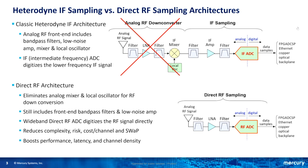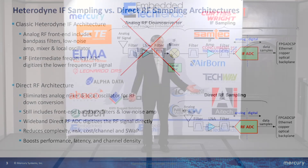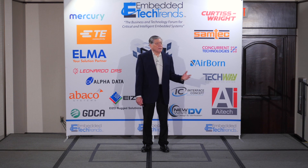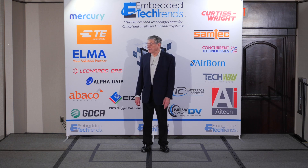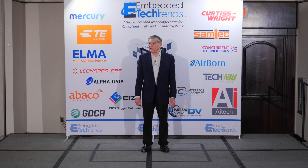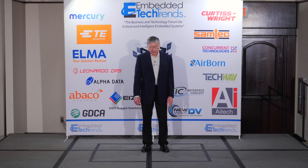Direct RF gives you a much simpler front end where you can capture signals directly at the RF signal frequency, eliminating all of the analog components — cost, size, weight, power, drifting, aging, phase noise, and so forth in a local oscillator — making the job of acquiring that signal much easier.